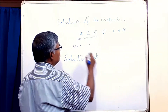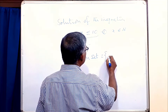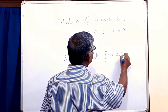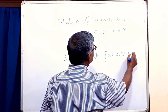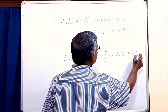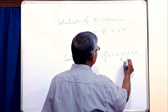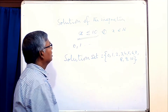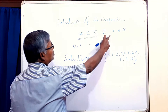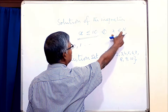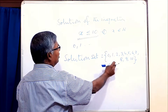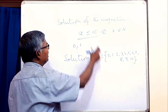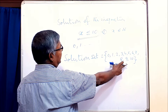So here the solution set is 0, 1, 2, 3, 4, 5, 6, 7, 8, 9, 10. Because x belongs to W, that is the whole number, so 0 is included and all these values satisfy the condition. Hence, this is the solution set.